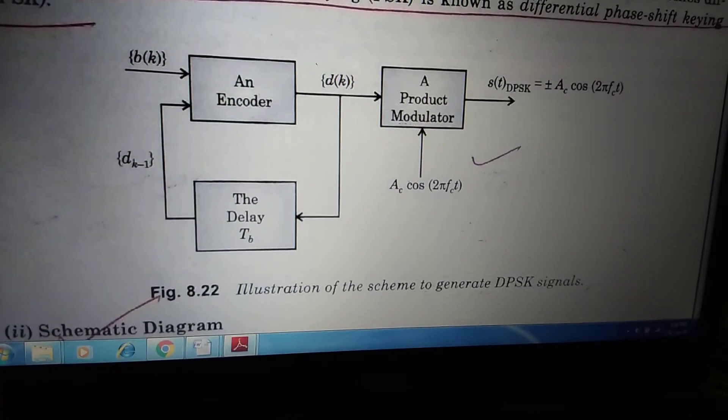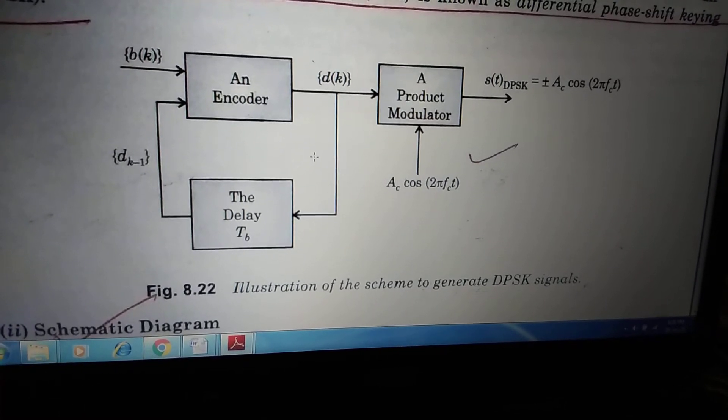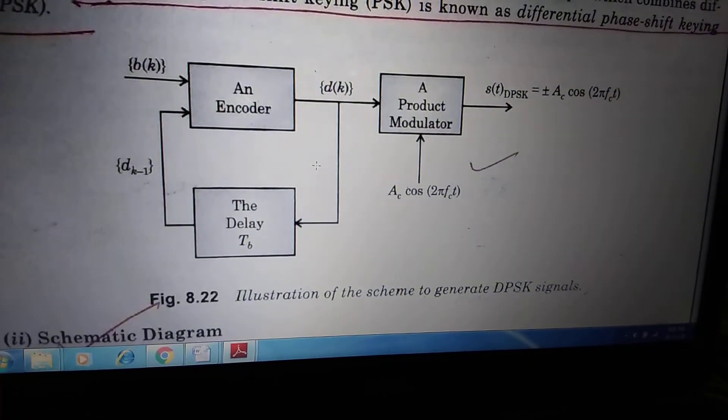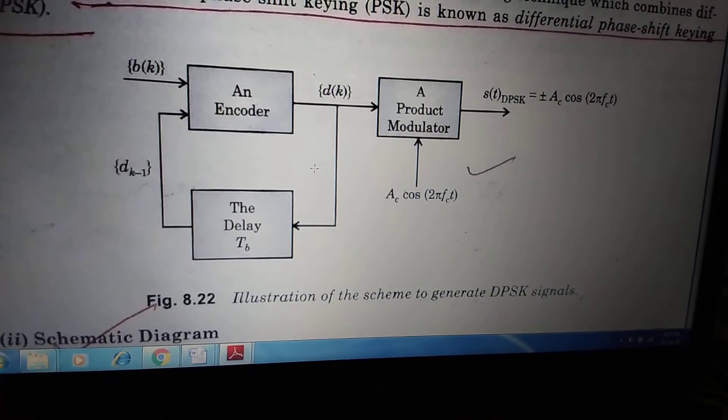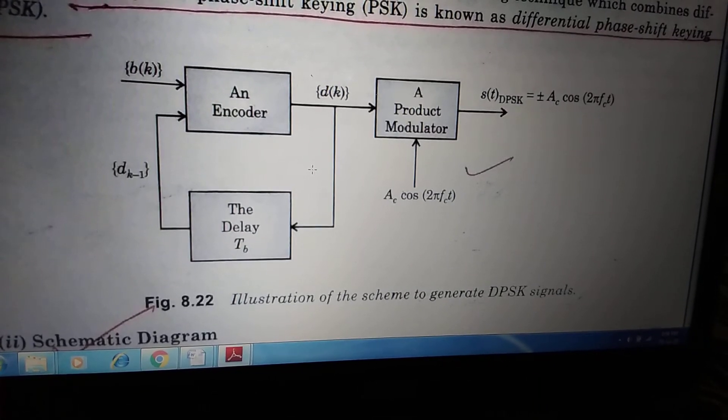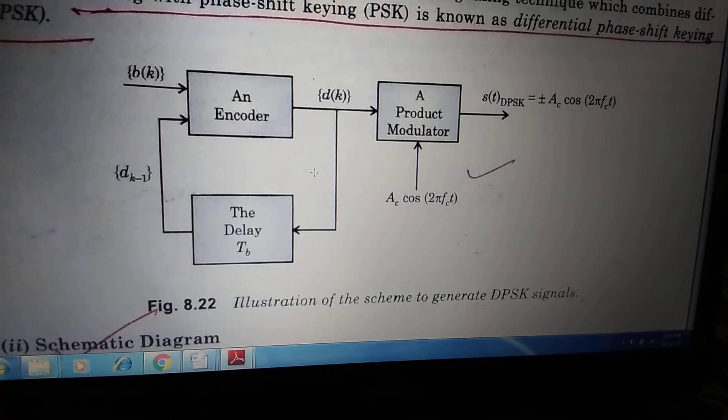So B of K is the input that we are giving to an encoder, and we are getting the output of D of K. And if you see the encoder, another input that is coming via from the D of K, we are using one delay line. The delay unit is TB, and we are getting D of K minus 1. These two things are given to an encoder, and depending upon the D of K minus 1 and the B of K, we are getting the output of D of K.